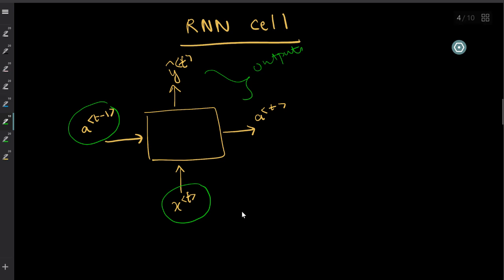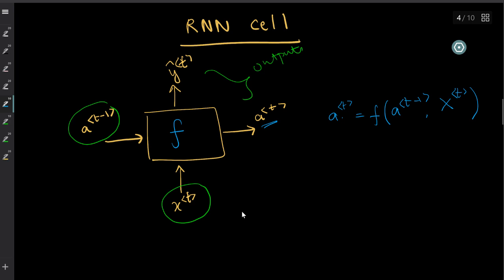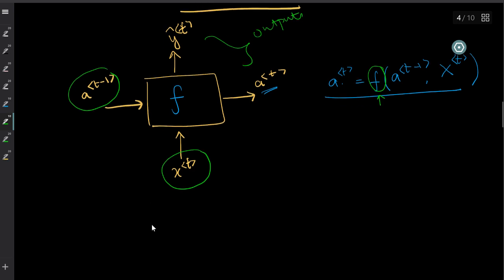So these two — a(t-1) and x(t) — are your inputs to the RNN cell, and y(t) and a(t) are your outputs. The RNN applies some function f to the input side. The next state a(t) is going to be some function of the previous state a(t-1) and the current input x(t). Now let's define what this function f would be — it's going to be like a very simple neural network.